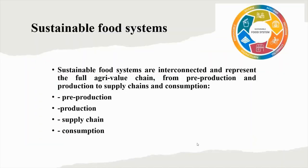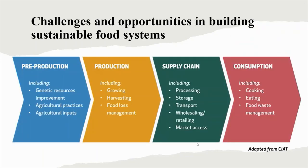Sustainable food systems are interconnected and represent the full agri-value chain, from pre-production and production to supply chains and consumption. Challenges and opportunities in building sustainable food systems are based on different stages. Pre-production includes generating resources improvement, agricultural practices and agricultural inputs. Production includes growing, harvesting and food loss management. The supply chain includes processing, storage, transport, wholesaling or retailing, and marketing access. The consumption stage includes cooking, eating and food waste management.